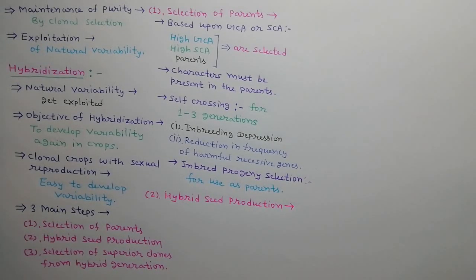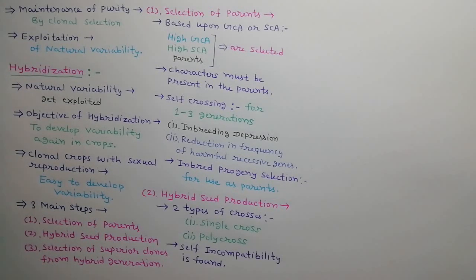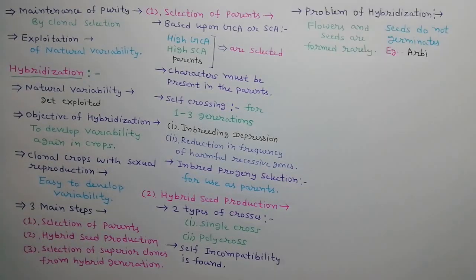The second step is hybrid seed production. Two types of hybridization can be done in parents: single-cross hybridization and poly-cross hybridization. Self-incompatibility is found normally in clonal crops; hence, hybridization is easy in these crops. The production of hybrid seeds and plants is a problem in those crops in which either the flowers and seeds are formed rarely or seeds do not germinate, as in herbs.